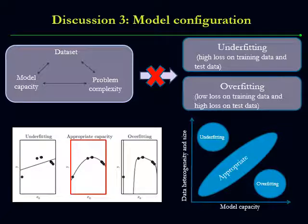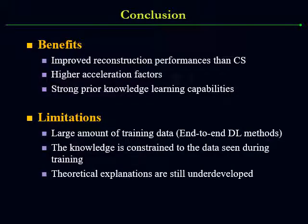We need to properly adjust the model capacity and training data size to achieve an appropriate fit for the image reconstruction problem. To conclude, I present the application of artificial intelligence for MR image reconstruction. The benefits of employing AI are obvious: better reconstruction results and higher acceleration factors can be achieved, and it has strong prior knowledge learning capabilities. Limitations of AI techniques include the requirement of large amounts of training data, and the prior knowledge is normally constrained to the data seen during training. Furthermore, the theoretical foundations are still underdeveloped.